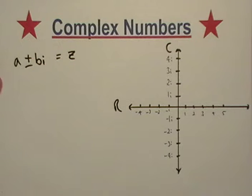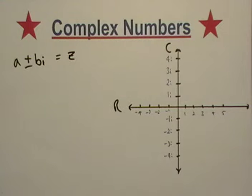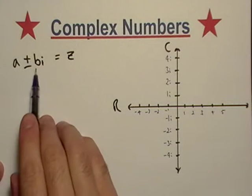Okay, now that we know a little bit about imaginary numbers, let's talk about complex numbers. Complex numbers are going to be in the form A plus Bi